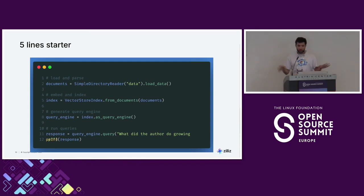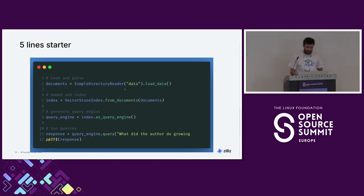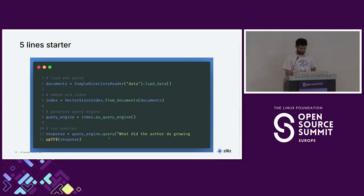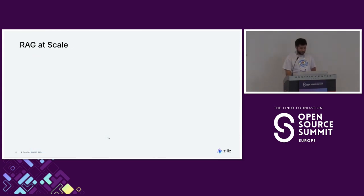If you do the simple version with LlamaIndex, it's five lines of code. You read your data, load it, parse it, put it through your embedding model, index it, and you have your query engine — you can actually talk with it and ask questions.